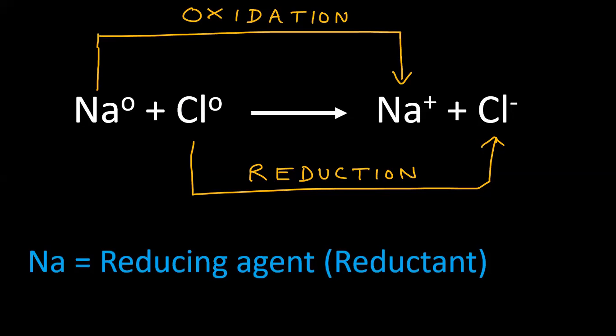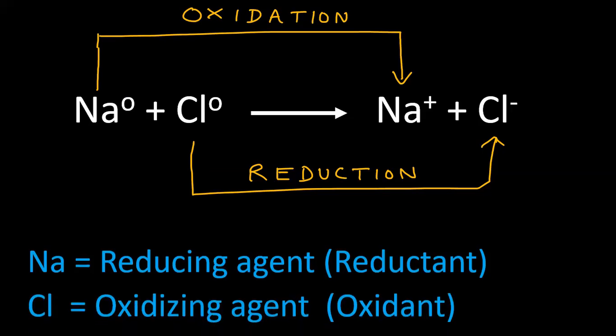Just like this example: traveling agent gives you the ticket, but the traveling agent never travels. Chlorine is an oxidizing agent. It oxidizes the opposite material, but it does not undergo oxidation.